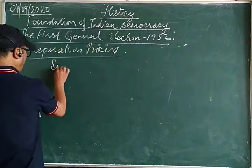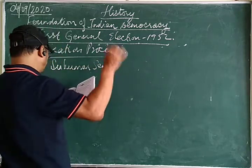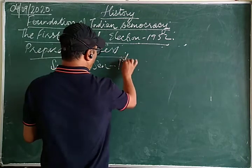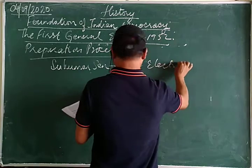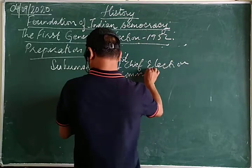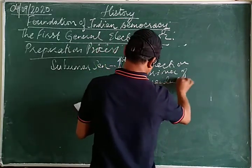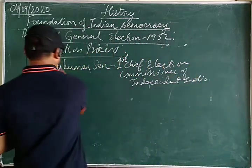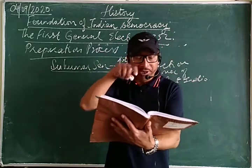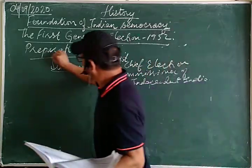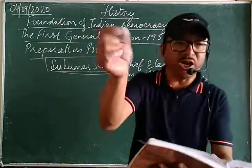Sukumar Sen, the first Chief Election Commissioner of independent India, handled the whole situation. He completely took over the responsibility of all the arrangements with great care and caution, being very careful and very cautious so that certain undesirable things might not take place.